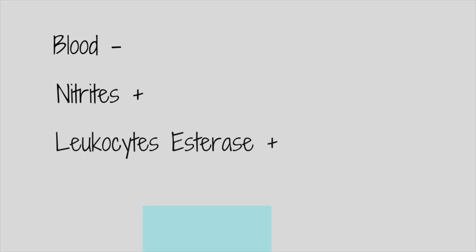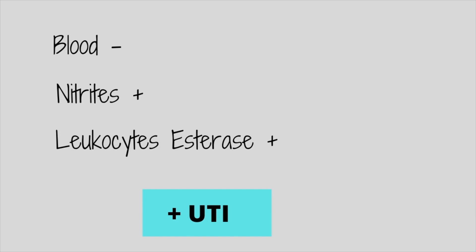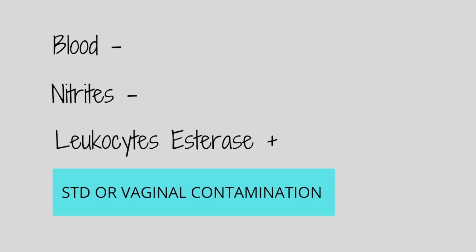Let me go over a few scenarios. If your urinalysis shows blood negative, nitrates positive, and leukocyte esterase positive — this is probably likely a UTI, and you want to send for culture to see what bacteria is growing. The next scenario: blood negative, nitrates negative, and leukocytes positive — this is probably contaminated. However, if the patient is having UTI symptoms, I would still send for a culture just to be safe.